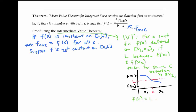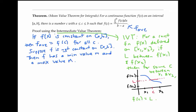A continuous function on a closed interval has to have a minimum value and a maximum value, which I'll call little m and big M. Now we know that f's average value on the interval has to be between its maximum value and its minimum value. Consider the fact that all of f's values on the interval have to lie between big M and little m.